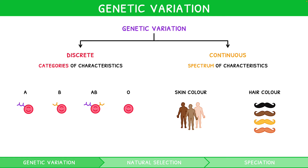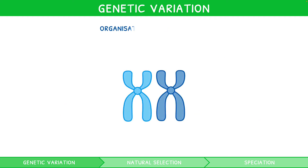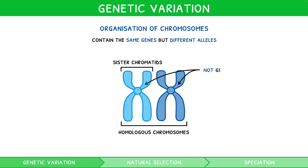But what are the processes of crossing over and random orientation? Before we dive into it, let's briefly recap the organisation of chromosomes in meiosis. They consist of two sister chromatids and are bound together in pairs named homologous chromosomes. Each pair contains chromosomes with the same genes but different alleles, i.e. each chromosome contained is not genetically identical.